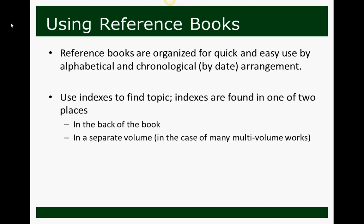This happens a lot with larger Encyclopedia Britannica-type sets, where you might have 36 encyclopedia volumes and then a 37th volume that is specifically your index. Indexes can help you find information more quickly than just flipping through alphabetically.